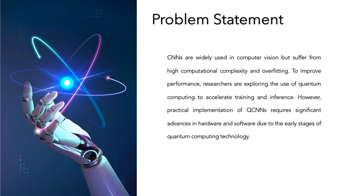Another dimension for the problem statement is that in computer vision, convolutional neural networks or CNNs excel in feature extraction but face issues like high complexity and overfitting. Quantum computing could potentially accelerate CNN training and inference, but practical implementation of quantum CNNs or QCNNs require further advancements in hardware and software.